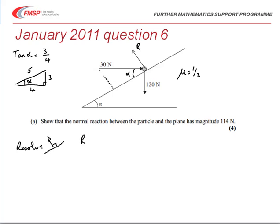Therefore it's going to be a component using sine alpha, and as it's acting into the plane it's minus 30 sine alpha. Then looking at the weight, the angle alpha is in this position and we want the component this time which is on the adjacent side of the triangle so it's cosine. So then we've got minus the weight 120 cosine alpha. We're told that this is in equilibrium so these equate to zero.